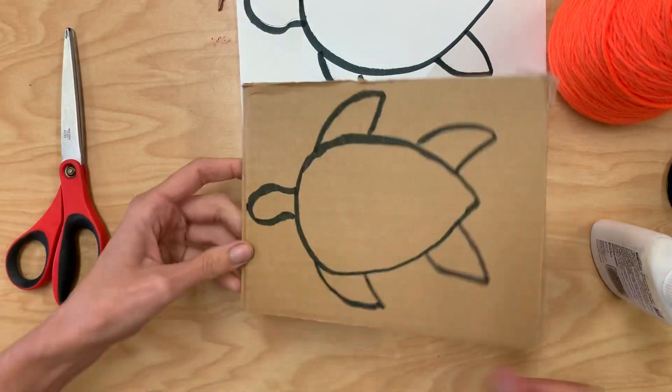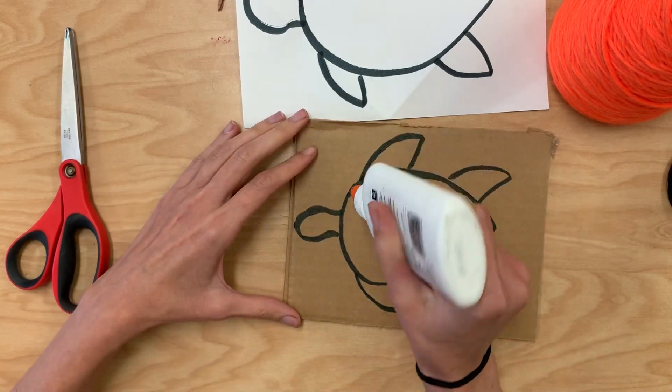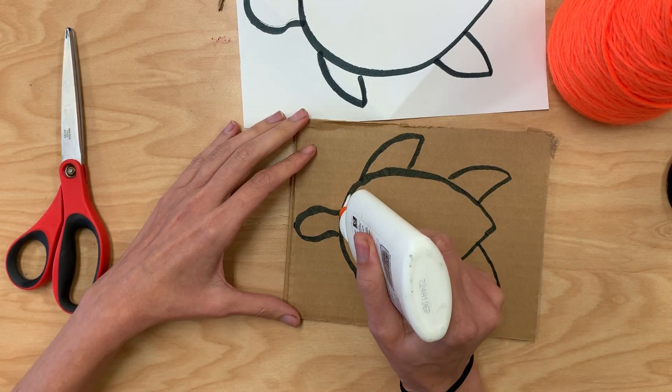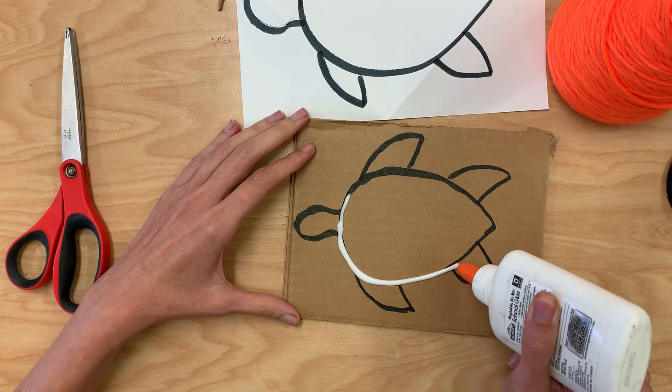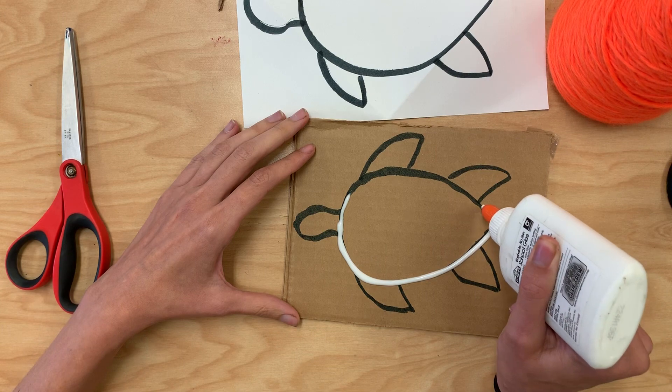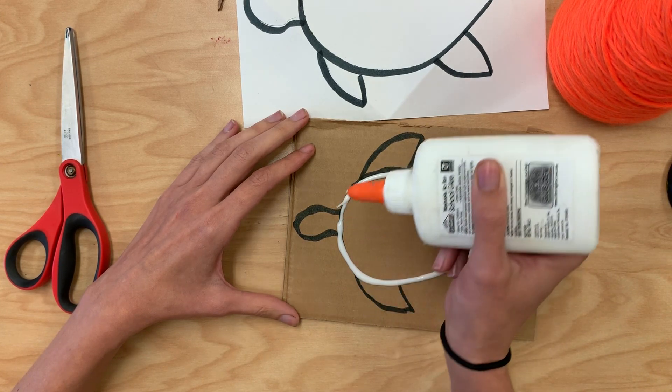And then I'm going to trace over this carefully with glue. So I have my glue here and I'm going to go really slowly and trace over my design with my glue. Try to stay on my lines. I don't need to be totally perfect, but I do want to try to stay as true to the picture as I can.